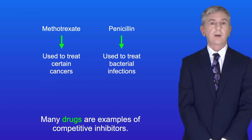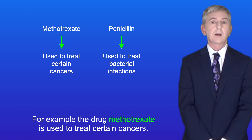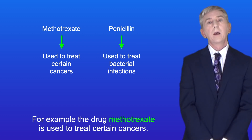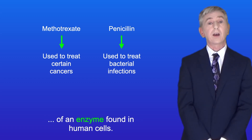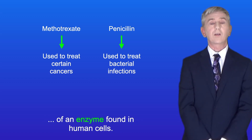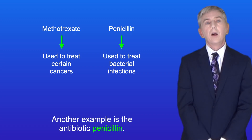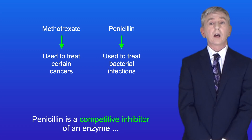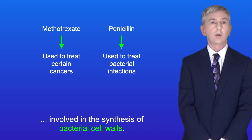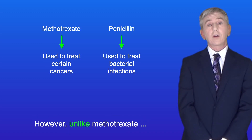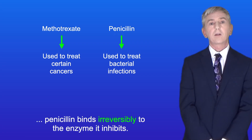Many drugs are examples of competitive inhibitors. For example, the drug methotrexate is used to treat certain cancers, and methotrexate is a reversible competitive inhibitor of an enzyme found in human cells. Another example is the antibiotic penicillin. Penicillin is a competitive inhibitor of an enzyme involved in the synthesis of bacterial cell walls. However, unlike methotrexate, penicillin binds irreversibly to the enzyme it inhibits.